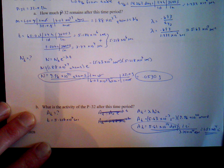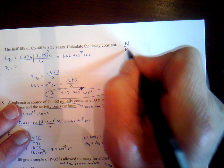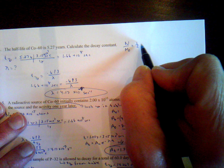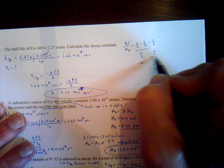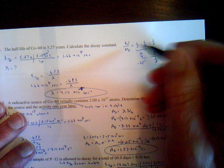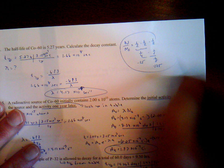One more thing: the fraction of a substance remaining is N over N-naught. After one half-life, one half remains. After two half-lives, one half times one half equals one fourth, or 0.25. After three half-lives, that's one eighth, or 0.125. To find the fraction remaining after any number of half-lives, simply multiply one half together that many times.